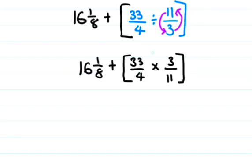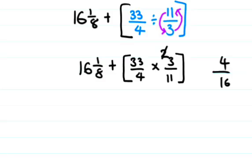If we simplify before multiplying, 33 and 11 both divide by 11, and 3 and 4... wait, let me check. We can simplify the numerators and denominators.